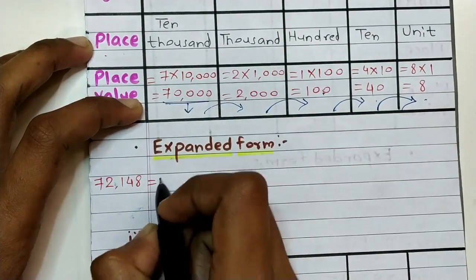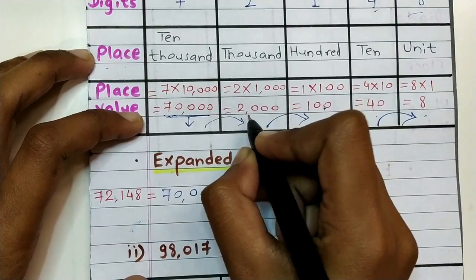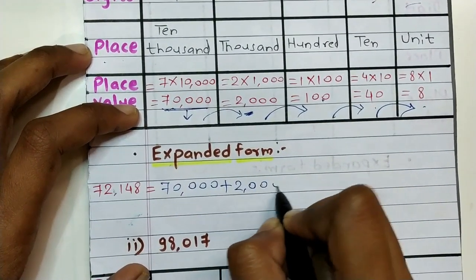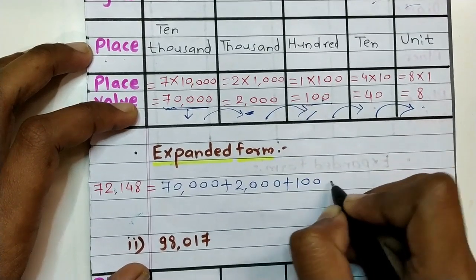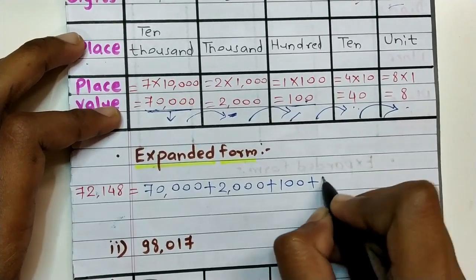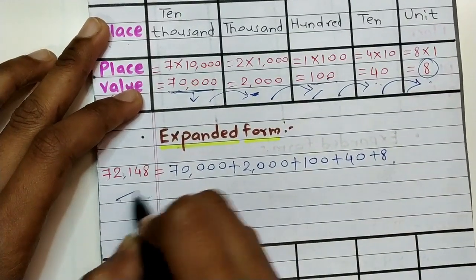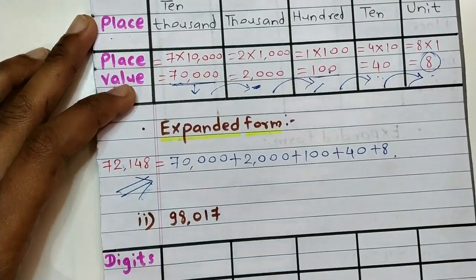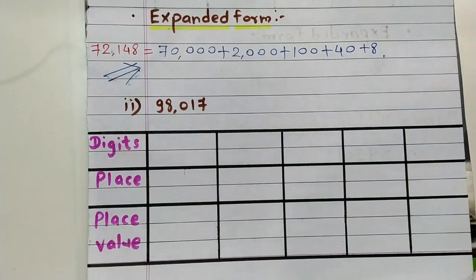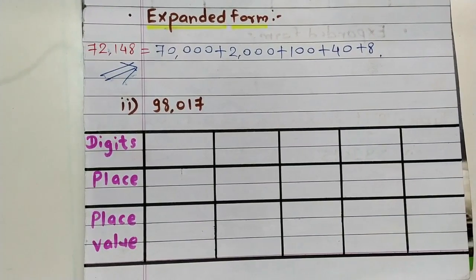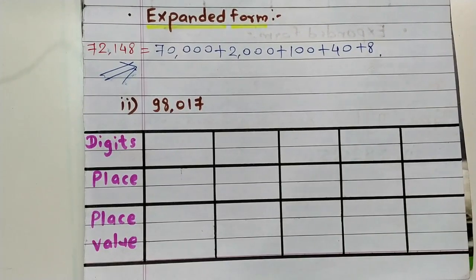Seventy thousand plus two thousand plus one hundred plus forty plus eight — this is the expanded form and our answer. Then next example is 98017, which is also a five-digit number.